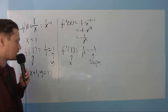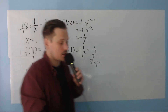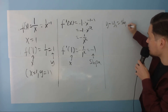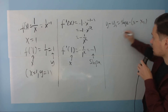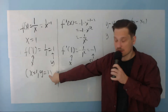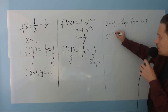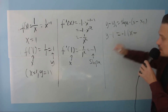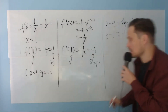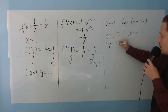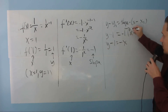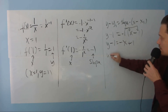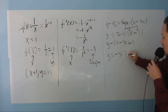With the slope in place, the next stage is to use the point-slope equation: y minus y1 equals the slope times x minus x1. So y minus 1 equals negative 1 times x minus 1. Distributing gives y minus 1 equals negative x plus 1, and adding 1 to both sides gives y equals negative x plus 2.